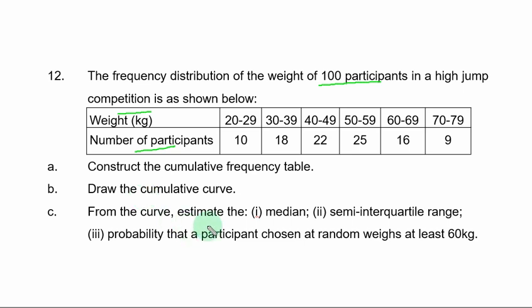Part C. From the curve, estimate the: roman numeral one, median; roman numeral two, semi-interquartile range; roman numeral three, probability that a participant choosing at random weighs at least 60 kilograms.